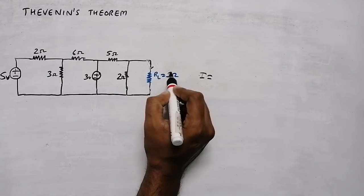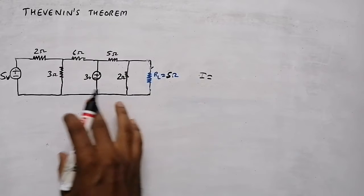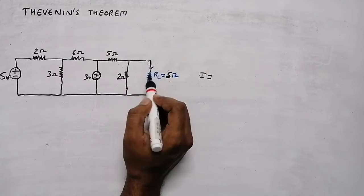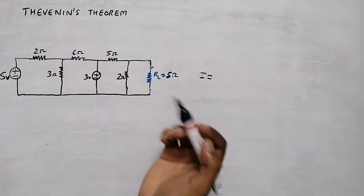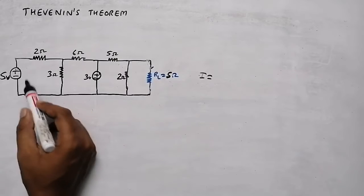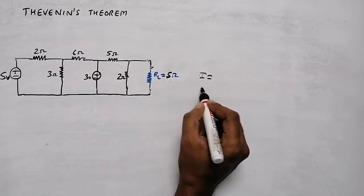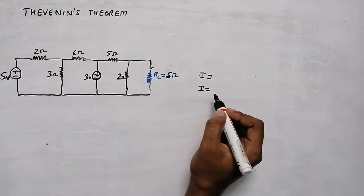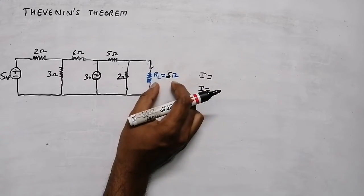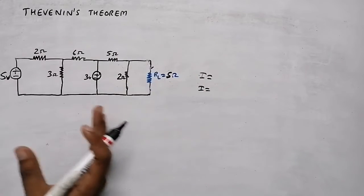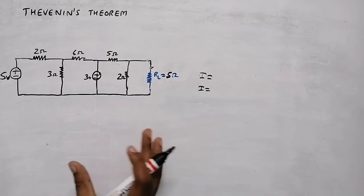Now they change the value of load resistor — they placed a 5 ohm resistor here — and again ask us to find the current through this load resistor. We will again start doing mesh analysis or node analysis. Again they change the value of load, and again we need to do the whole process again.